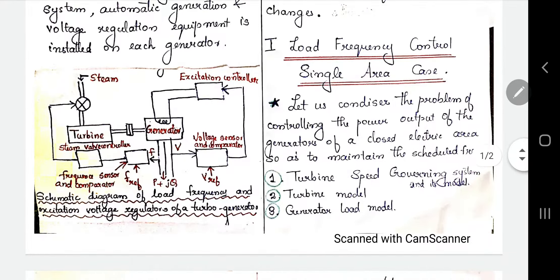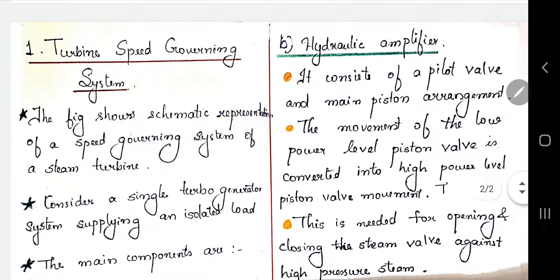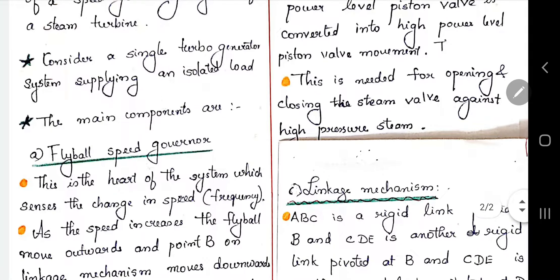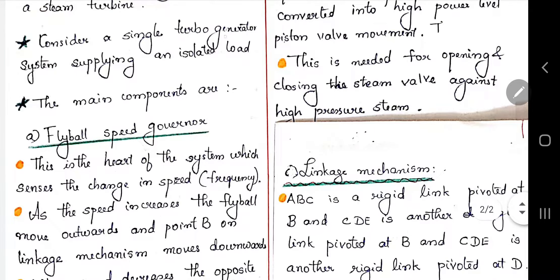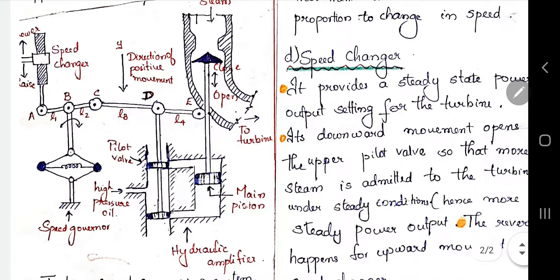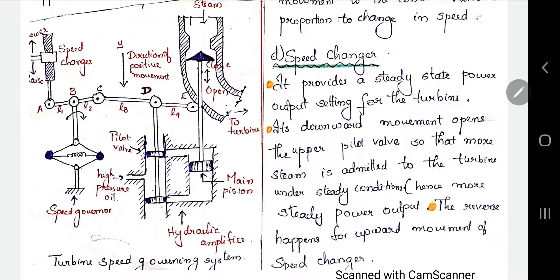In this class, we are first going to study the turbine speed governing system. The figure shows the schematic representation of the speed governing system of a steam turbine. We are going to consider a single turbo-generator system supplying an isolated load.